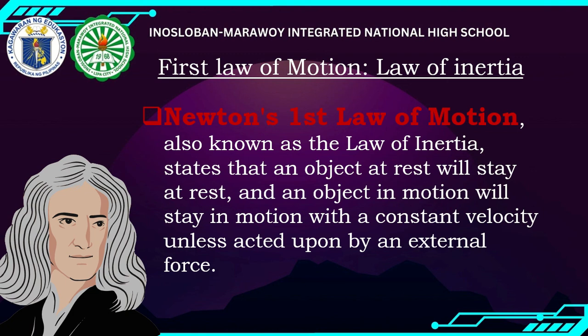However, Newton's explanation is more detailed. While Galileo focused only on objects in motion, Newton also addressed objects at rest — stating that objects at rest will stay at rest forever if no unbalanced force disturbs them. An object in motion will also stay in motion with constant velocity unless acted upon by an external unbalanced force.